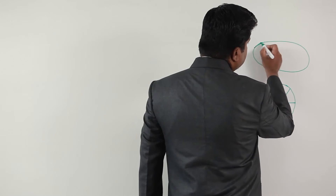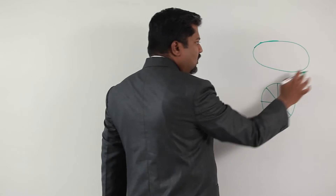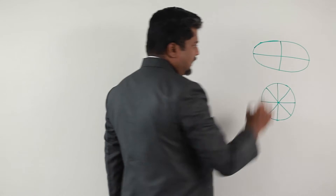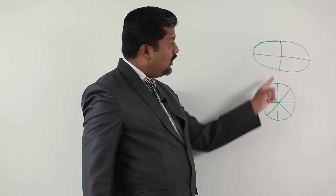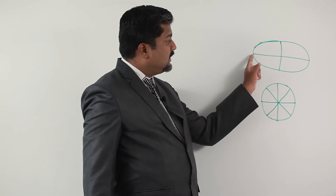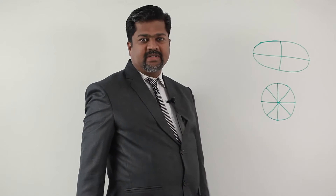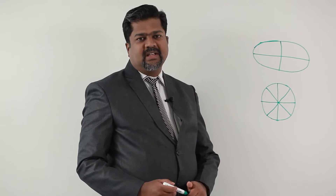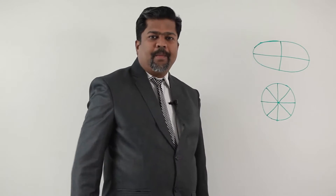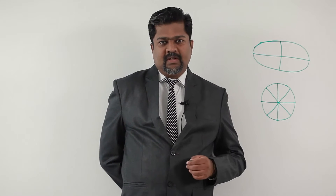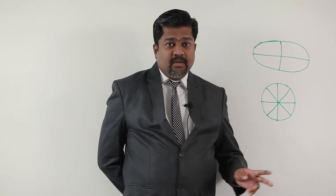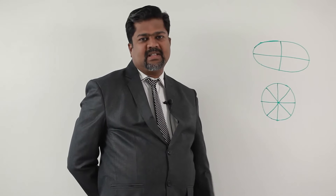But in the case of an ellipse, it is somewhat extended. There are two axes — they are not called diameters; they are called the major axis and the minor axis. So this is the major axis and this is the minor axis. Two axes are different here. In geometry, a circle is considered a special type of ellipse where the length of the major axis and minor axis is the same. But otherwise, in an ellipse, two different axes exist.